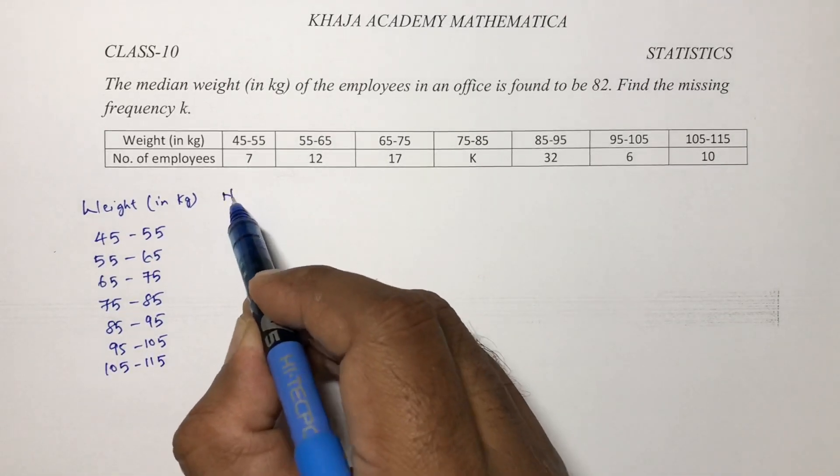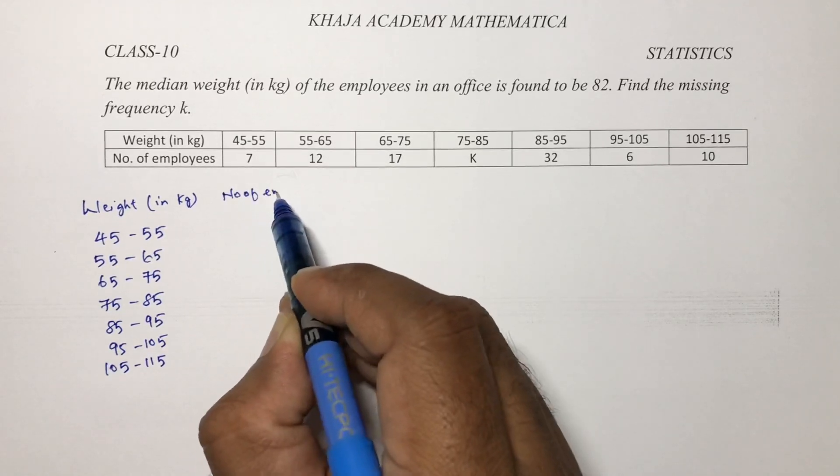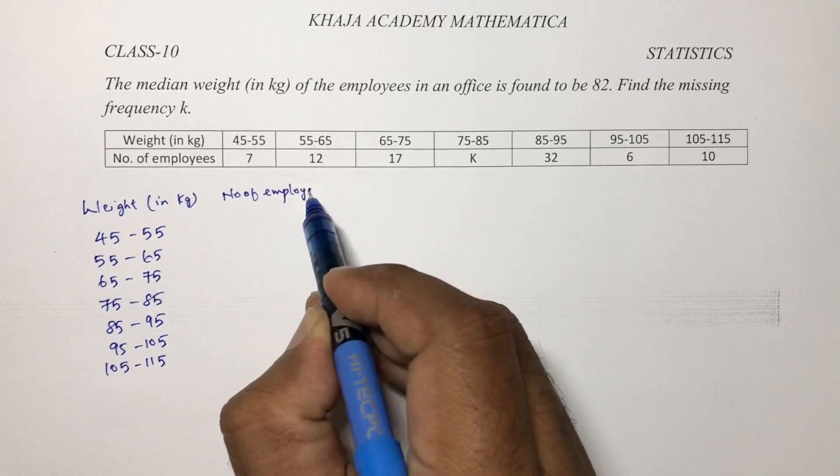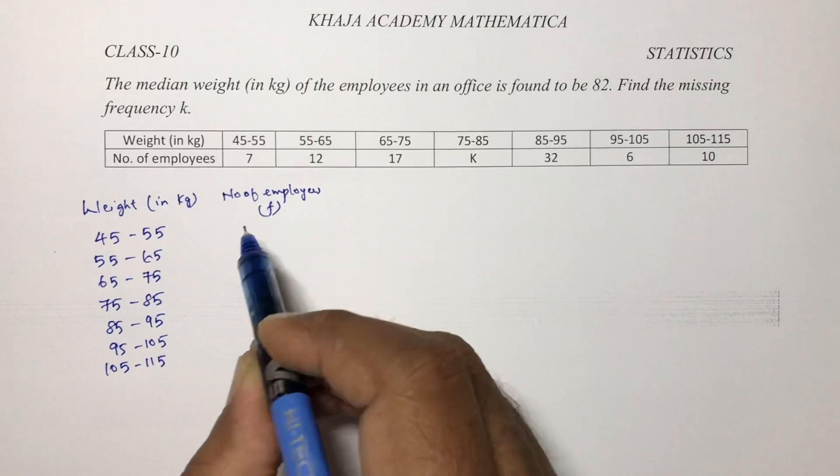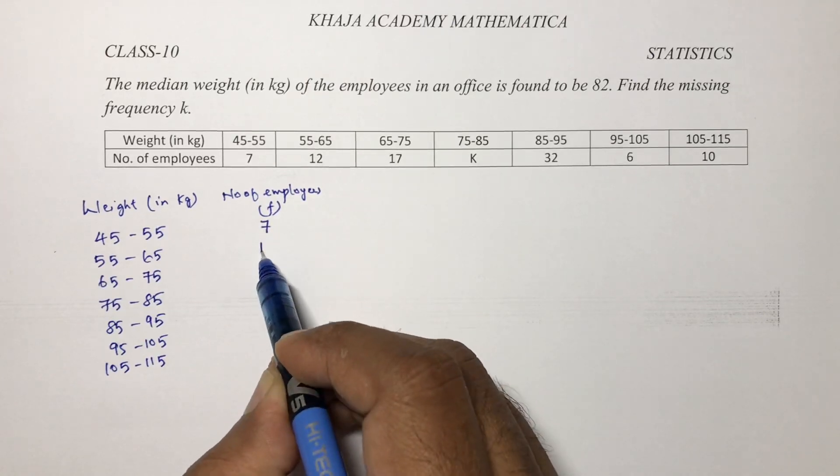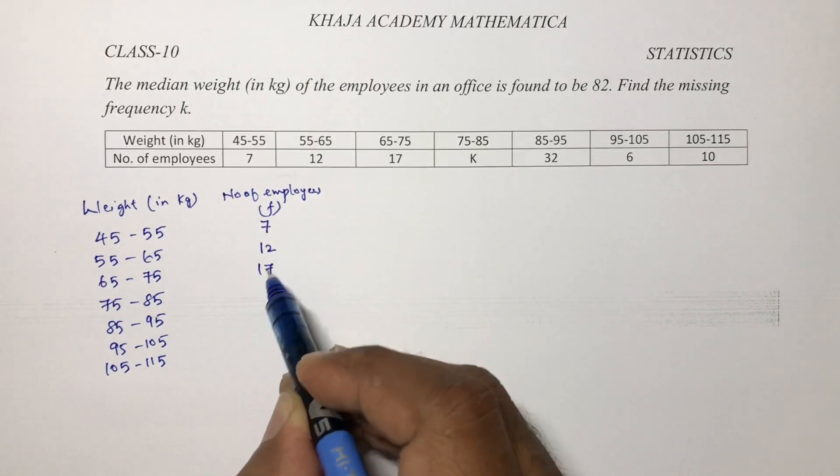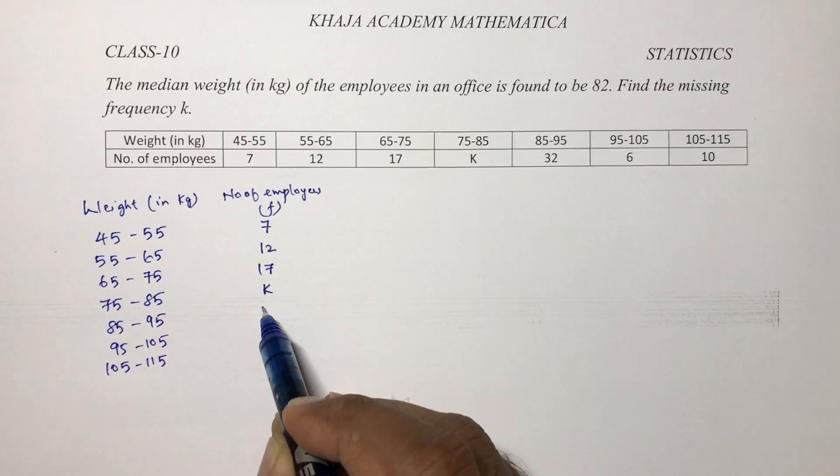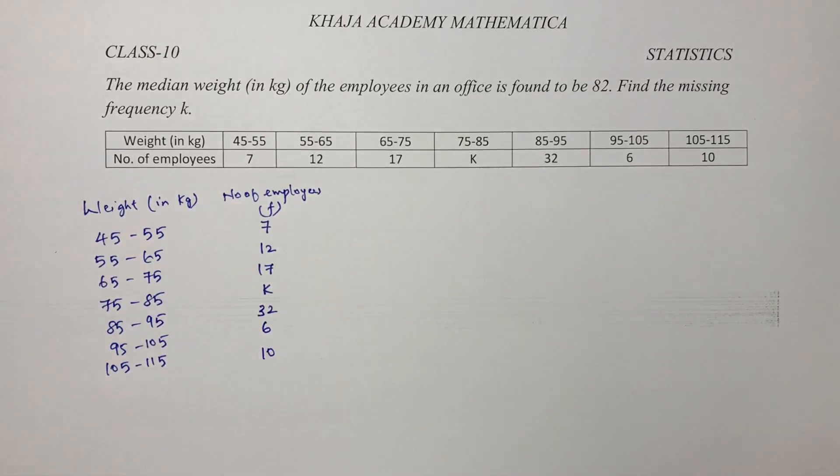The number of employees is nothing but frequency. That is 7, 12, 17, k, 32, 6, 10.